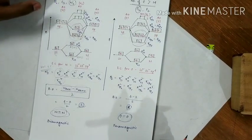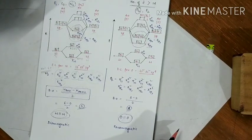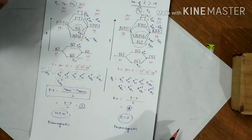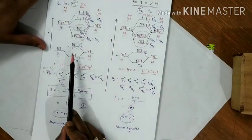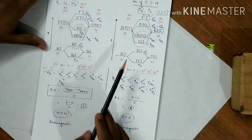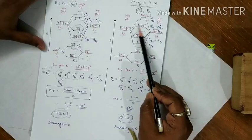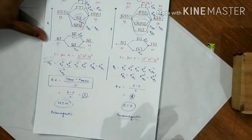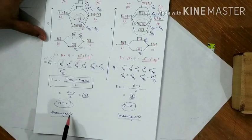Another property we can find is the magnetic behavior. Diamagnetic substances are not affected by a magnetic field, while paramagnetic substances are attracted to a magnetic field. To determine which applies, we check for unpaired electrons. Oxygen has unpaired electrons in its π* orbitals, so it is paramagnetic. Nitrogen has all electrons paired, so it is diamagnetic.